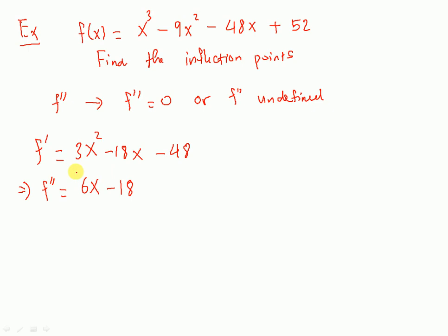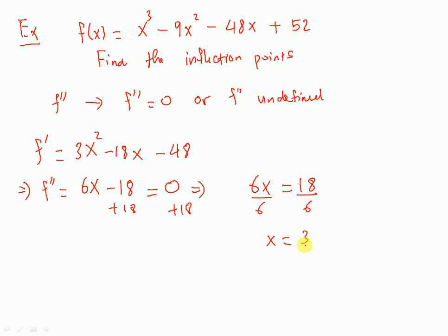Now we have f double prime. We set this equal to zero. Remember, if you're testing for the critical point, you set the first derivative equal to zero. If you are testing for the inflection point, you set f double prime equal to zero and solve for x. So 6x minus 18 equals 0, add 18 to both sides: 6x equals 18, divide by 6, and x equals 3. Now, x equals 3 is not yet confirmed as the inflection point — it is a possible inflection point. We have to test to confirm it.